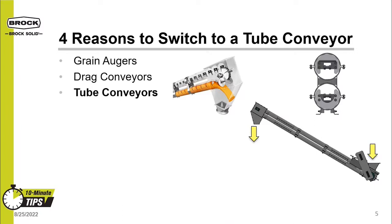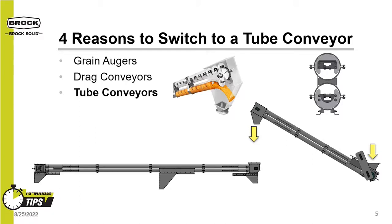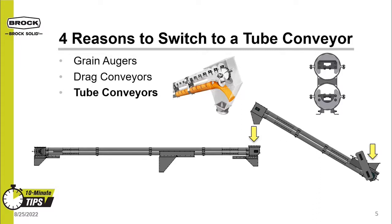The third method of conveying is a tube conveyor. It utilizes a chain equipped with paddles that moves the grain through a round tube. They typically come in tube diameters ranging from 6 inches to 12 inches. These conveyors can be used on inclines ranging from 0 to 45 degrees. They can typically be seen filling bins, filling dryers, or transferring grain between other handling equipment. Not only can grain enter at the inlet and then be discharged at the end, these conveyors can also be used across the peaks of multiple bins, discharging just about anywhere along the conveyor.